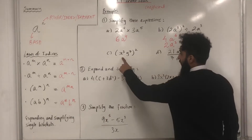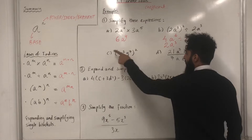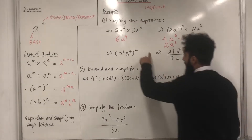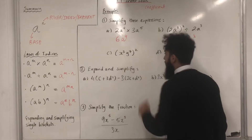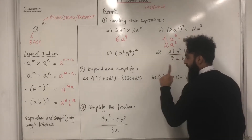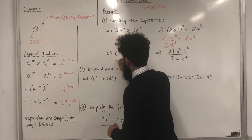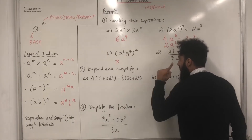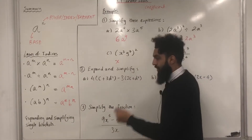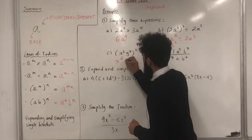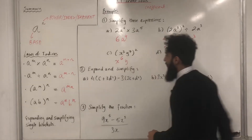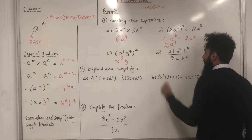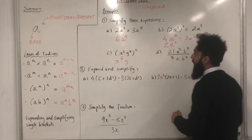Part C: X cubed, Y to the power 7, in brackets to the power 2. We need to use the bracket law to simplify. We write X — the power of X is 3, we multiply by 2, giving us 6. Then we write Y — the power of Y is 7, we multiply by 2, giving us 14.